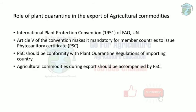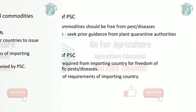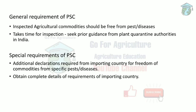Regarding the role of plant quarantine in the export of agricultural commodities: the International Plant Protection Convention, under Article 5, requires that phytosanitary certificates be issued. Agricultural commodities being exported must be accompanied by a phytosanitary certificate sent to the receiving country.